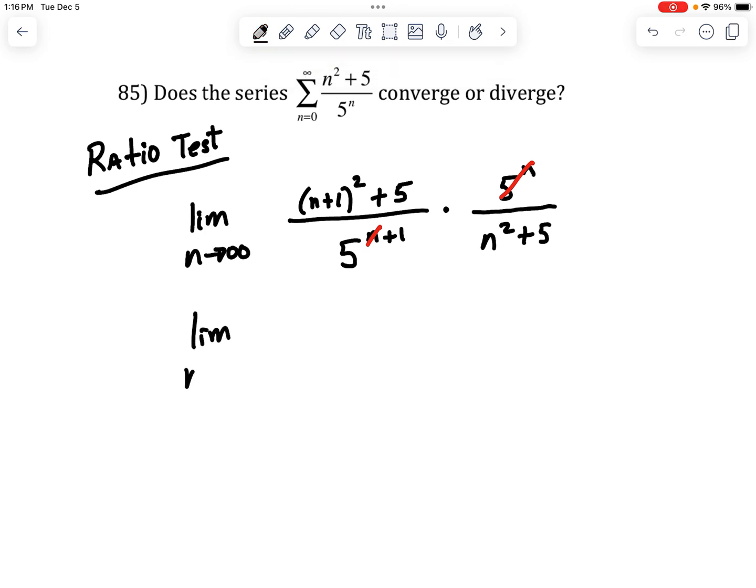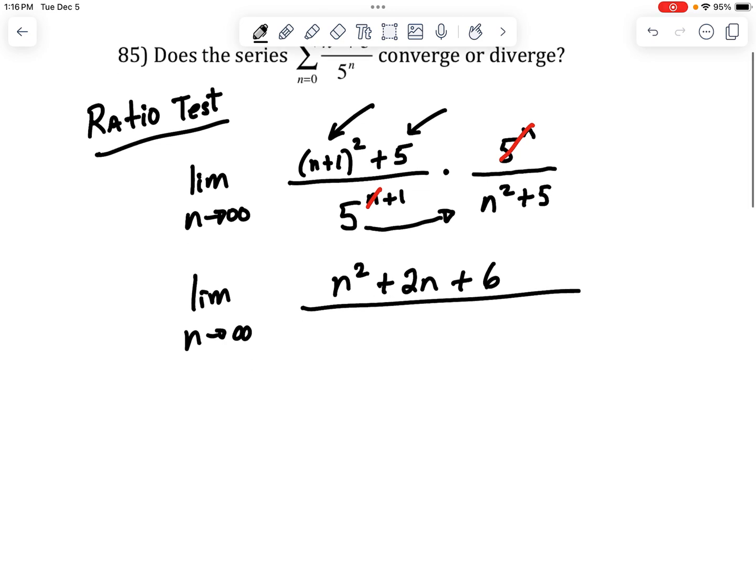So the limit as n goes to infinity. Then on the top, I think I'll go ahead and multiply this out. So that's going to be n squared. The middle term will be 2n, and then it'll be plus a 1. It also has this plus 5, so combining the 1 with the 5 makes a 6. And on the bottom, we have this 5 that's being multiplied with n squared plus 5. So that would be 5n squared plus 25.